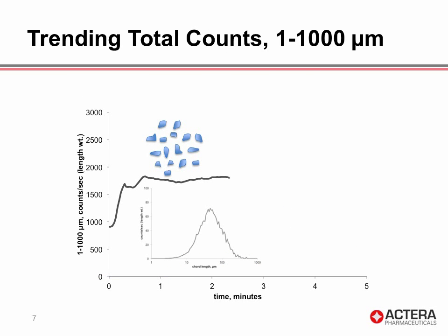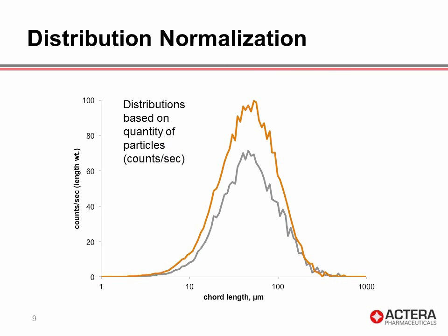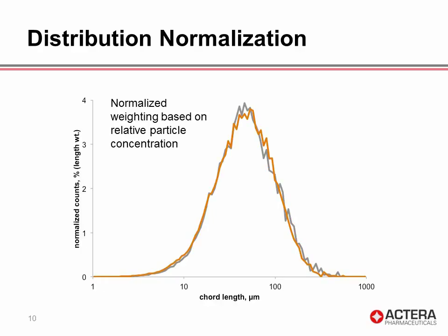Another way to look at the counts generated by the FBRM probe is to trend the overall total counts — in this case, the number of particle counts from 1 to 1,000 micron. The trend is a flat line because there are no dynamic events occurring in the mixing suspension. When we add more powder to the vial, we see a corresponding increase in total counts, with the peak height increasing with the number of particles added. The FBRM software also allows normalization of distributions, useful to compare relative shape after adding more particles. Since we added the same particles, the normalized distributions look identical.